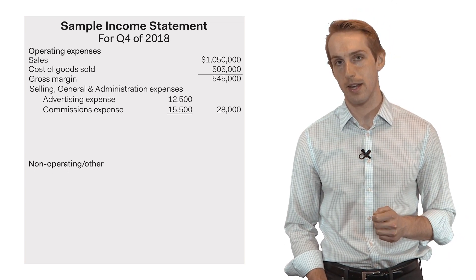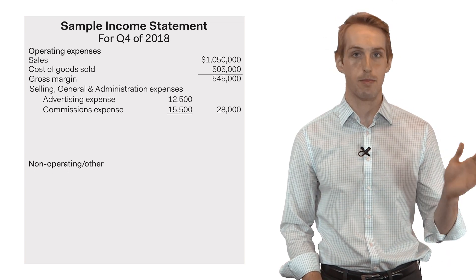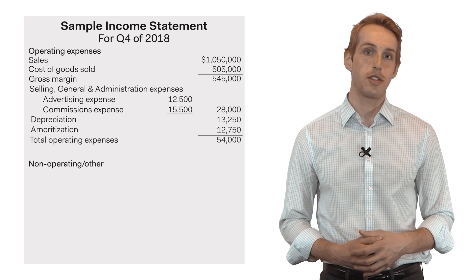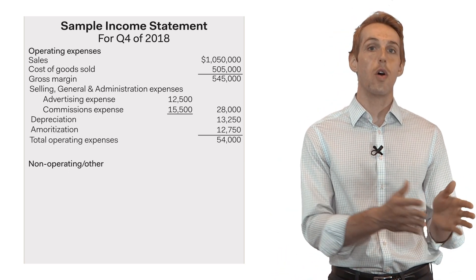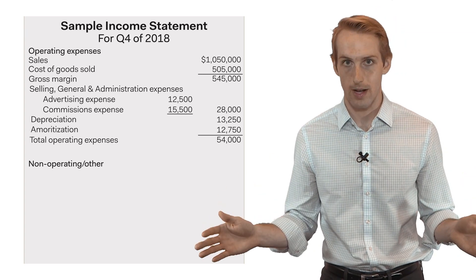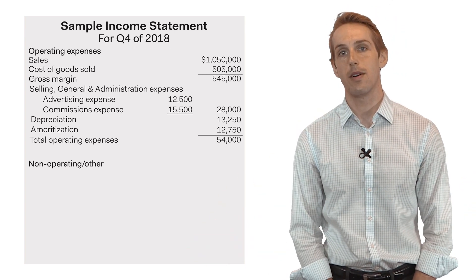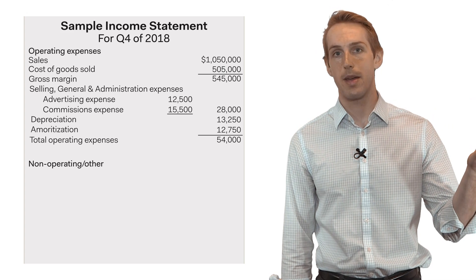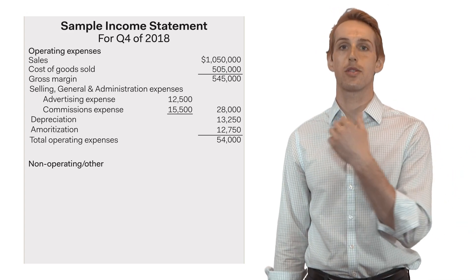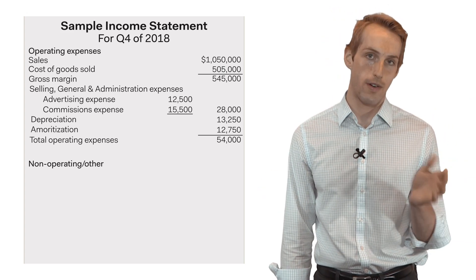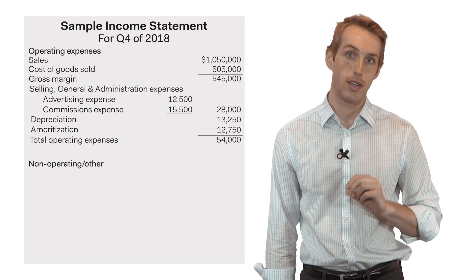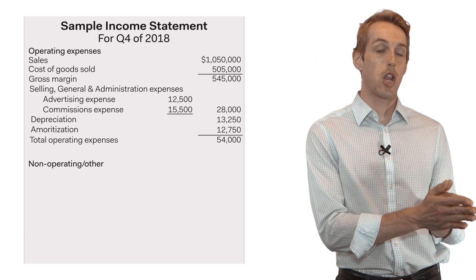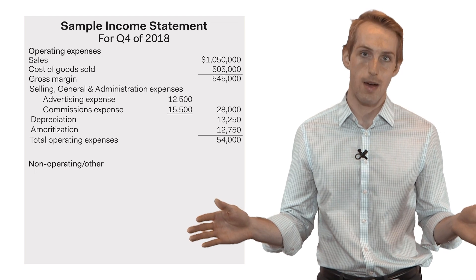Another one of these non-product operating expenses is depreciation and amortization. These are expenses associated with using fixed assets over the period of our income statement. For example, if a company built a $40 million laptop manufacturing plant that was supposed to last 20 years, each year we would deduct $2 million in expenses to account for using that plant over its 20-year useful lifetime.